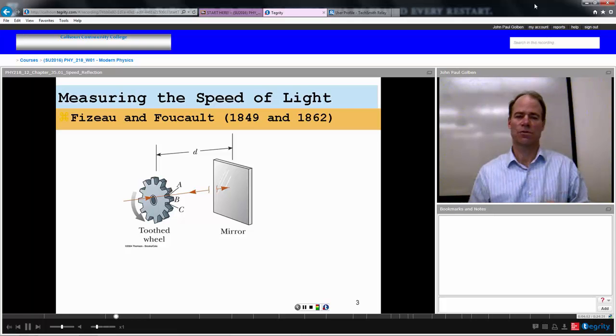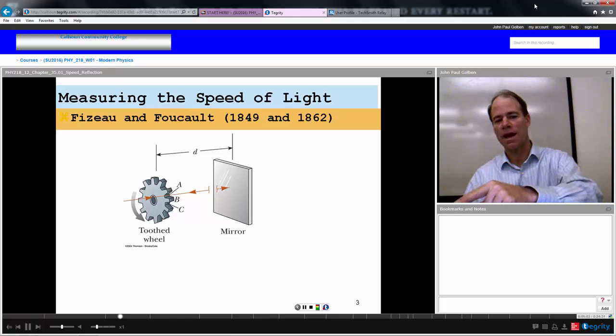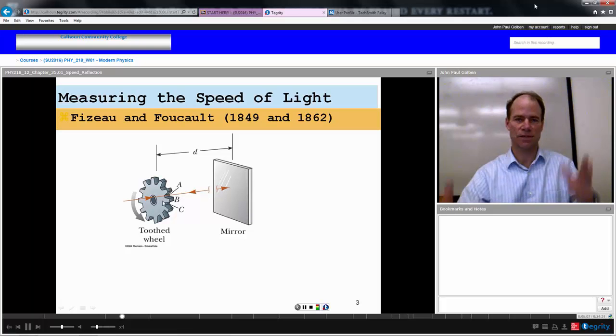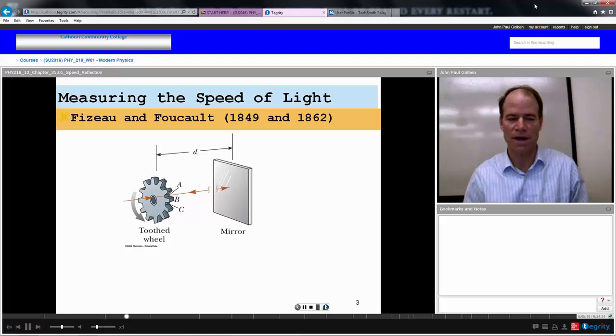Now, if you increase the speed of the wheel, there will be some point where you're moving the wheel so fast, the light will go through the gap, and on its way back, it's going to hit one of these tooths on the way back, and hence get blocked. So you increase the speed of the wheel to the point where you don't see the light, and at the moment, you know that it's just going there and just barely getting blocked on the way back.